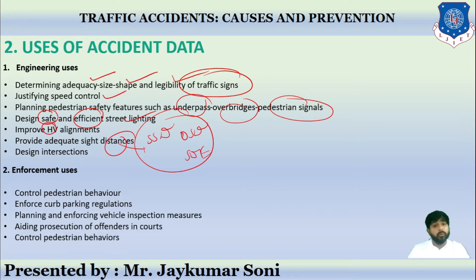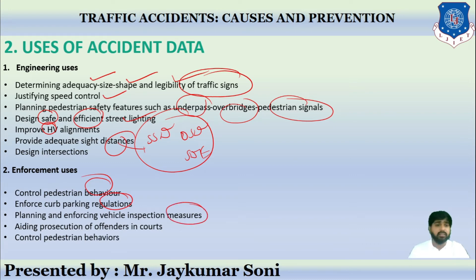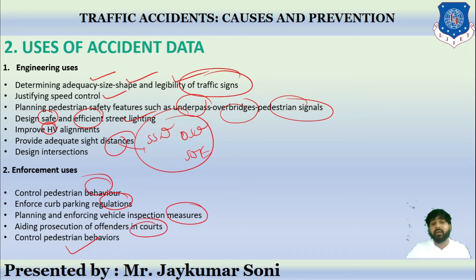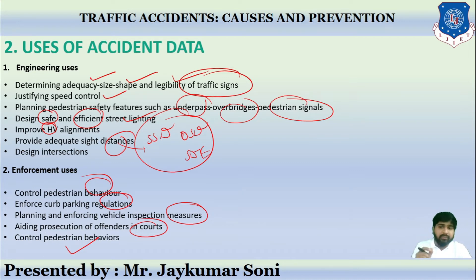The second category is enforcement uses, which involve controlling pedestrian behavior, enforcing curb parking regulations, planning and enforcing vehicle inspection measures, aiding prosecution of offenders in court. These are rules and regulations which must be implemented and established in order to reduce the number of accidents.